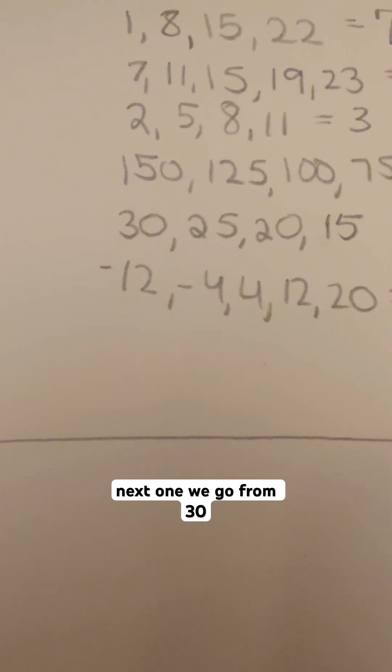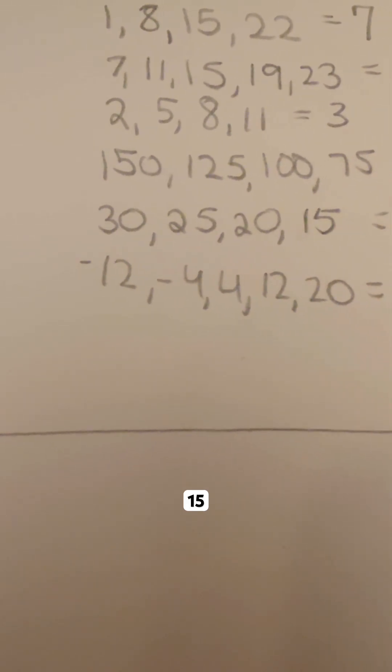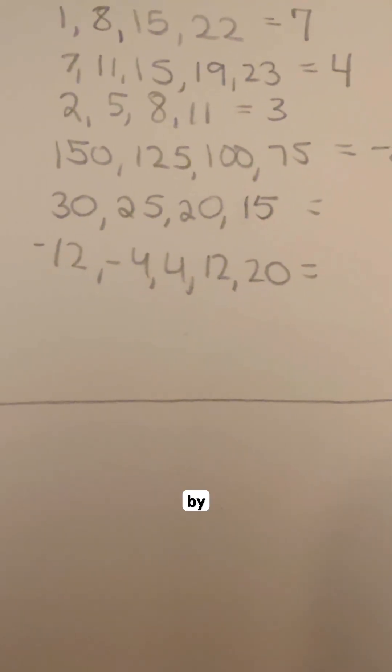Our next one, we go from 30 to 25 to 20 to 15. Again, this one is dropping by 5 every single time. So our common difference is negative 5.